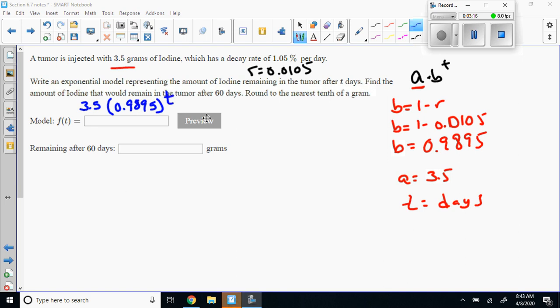The equation would be 3.5 times 0.9895 raised to the t. If we're going to see how much iodine is still left within 60 days, then f of 60 equals 3.5 times 0.9895 raised to the 60th power, and when you calculate that you get 1.85.